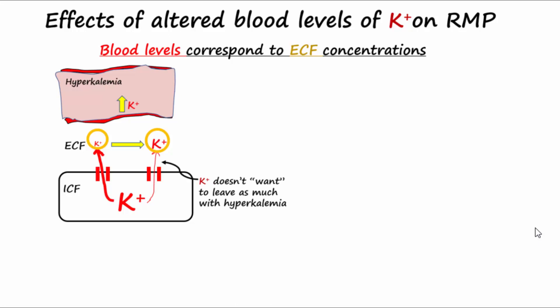Decreasing the potential for a positive ion to leave will depolarize the cell. Hyperkalemia will cause electrically excitable cells like cardiac cells to be more depolarized, leading to cardiac arrhythmias.